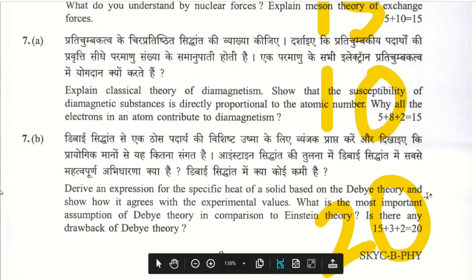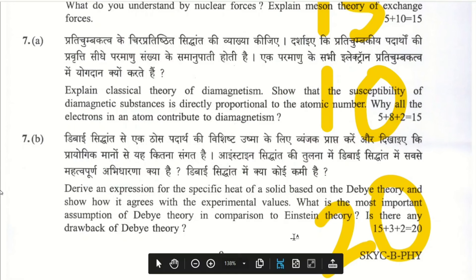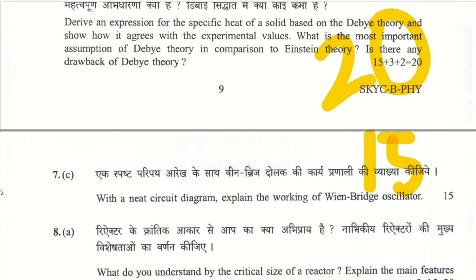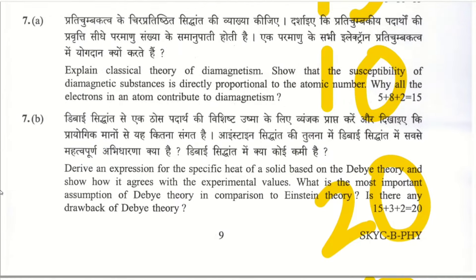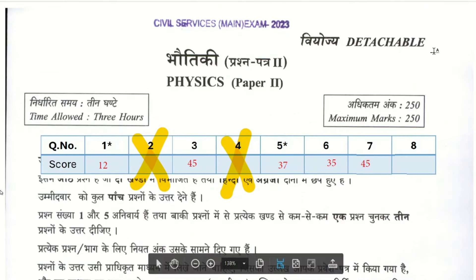We are skipping Question 8, so attempting Question 7. Part A — classical theory of diamagnetism, susceptibility proportional to atomic number — 10 marks. Part B — why all electrons in atom contribute to diamagnetism — very important, giving 20 marks. Part C — Wien bridge oscillator — 15 marks from notes. Total for Question 7: 45 marks.